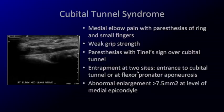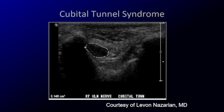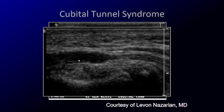The ulnar nerve can be entrapped at two sites at the level of the elbow: at the entrance to the cubital tunnel at the medial epicondyle, or as it pierces the flexor pronator muscles distally. There's a size criterion, but I like to look for a difference in size between the affected portion and the normal of about two-fold. Here's an enlarged ulnar nerve adjacent to the medial epicondyle — this is definitely very enlarged.